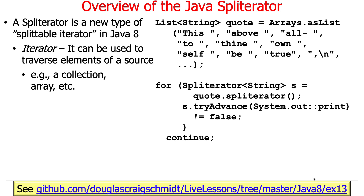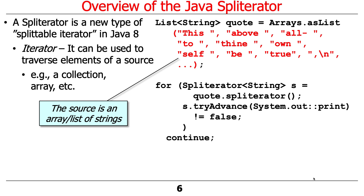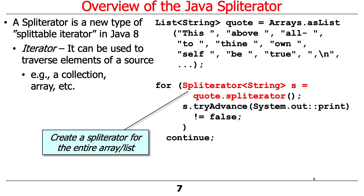Let's take a look at a simple example which occurs in EX13. In this particular case, the source is going to be an ArrayList of strings. We quote Shakespeare — a famous Shakespeare quote — so we have a list of strings corresponding to this quote. The way you do this is you start by calling the spliterator method on the list. Every built-in collection in Java contains a spliterator method, so you can always convert a collection into a spliterator. We say quote_quotes_list.spliterator(), and that returns a spliterator.